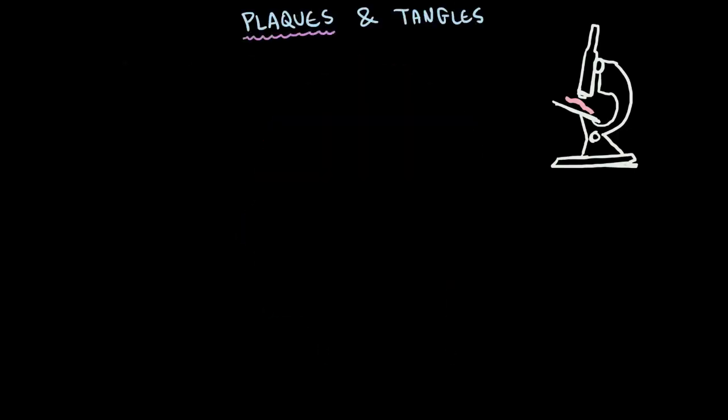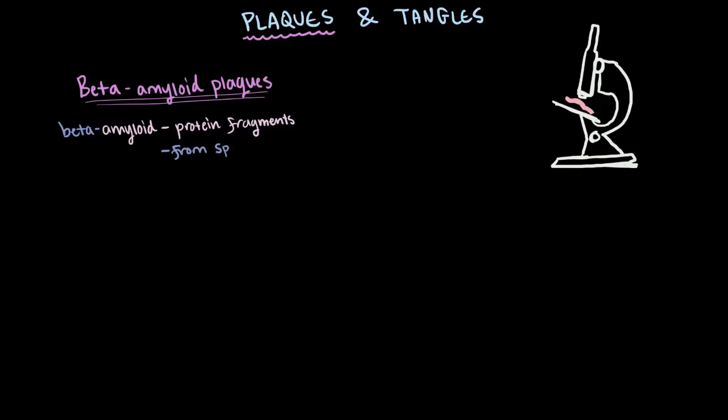Let's just look at these plaques for a minute. Well actually, they're called beta-amyloid plaques. Amyloid is the name we use for fragments of proteins, so it's not the whole protein, just little bits of it. These are produced normally in the body. Beta-amyloids are protein fragments that have been snipped off the larger protein by specific enzymes.